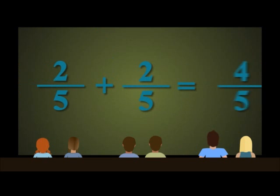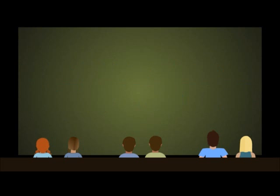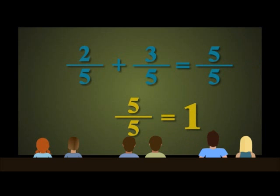Adam, what is two fifths plus two fifths? Is it four fifths? Does everyone agree? Yeah. Mm-hmm. Yep. Good. Let's try one more. What is two fifths plus three fifths? Five fifths? But wait, isn't that just the whole thing? Good observation. So five out of five is one whole thing, right?